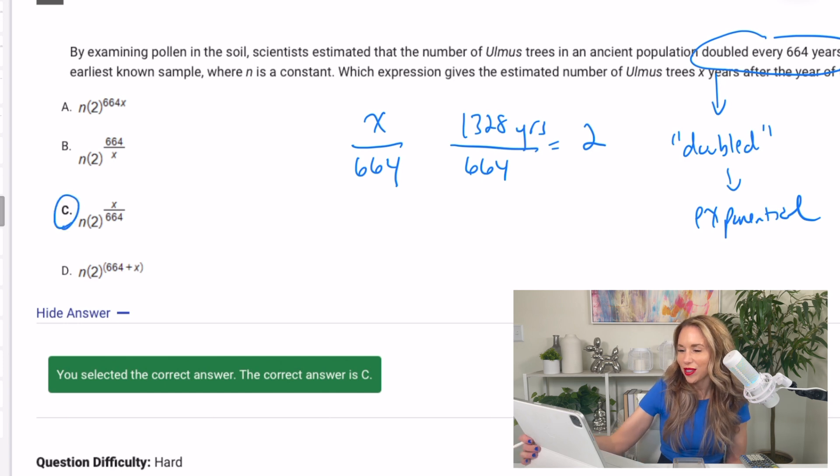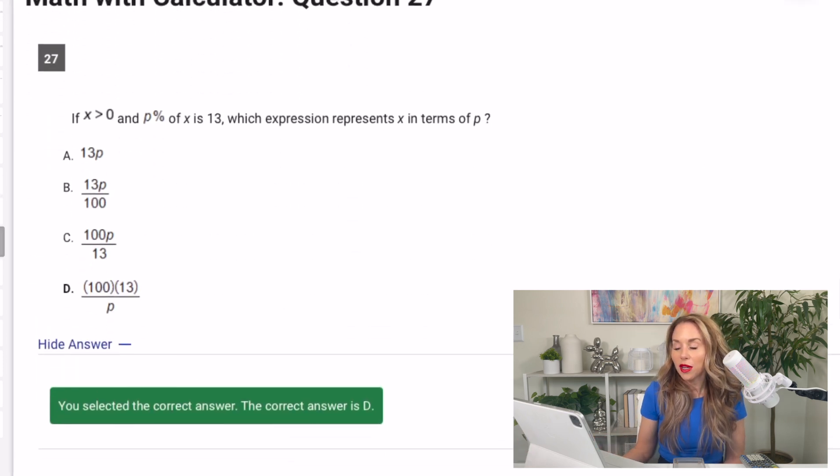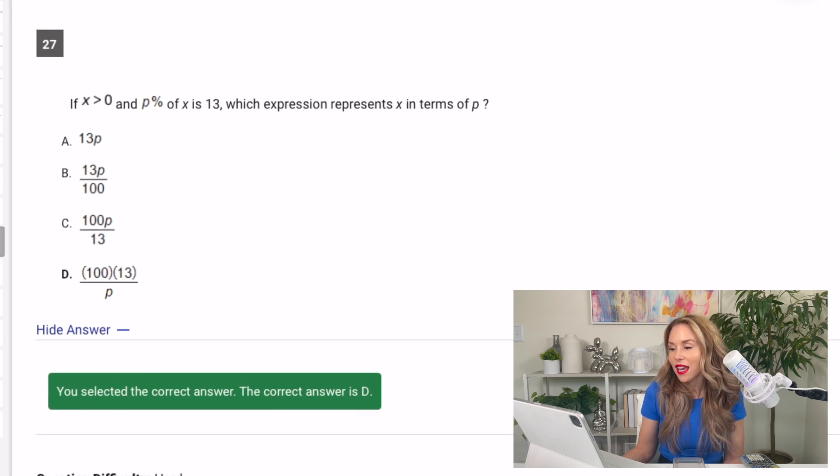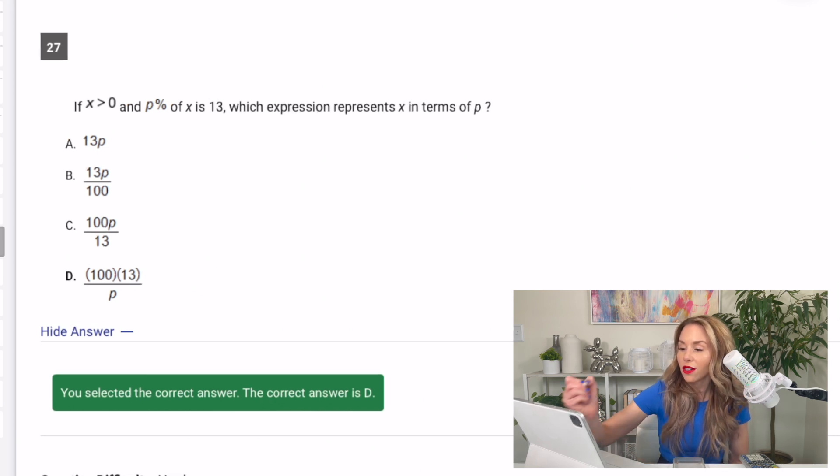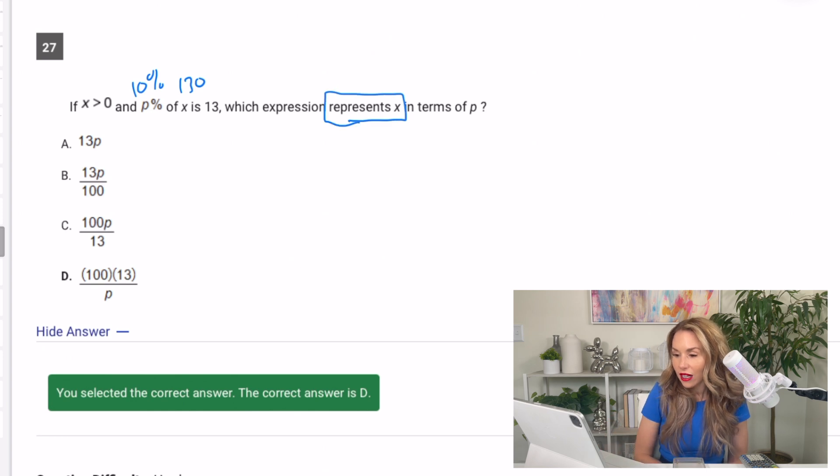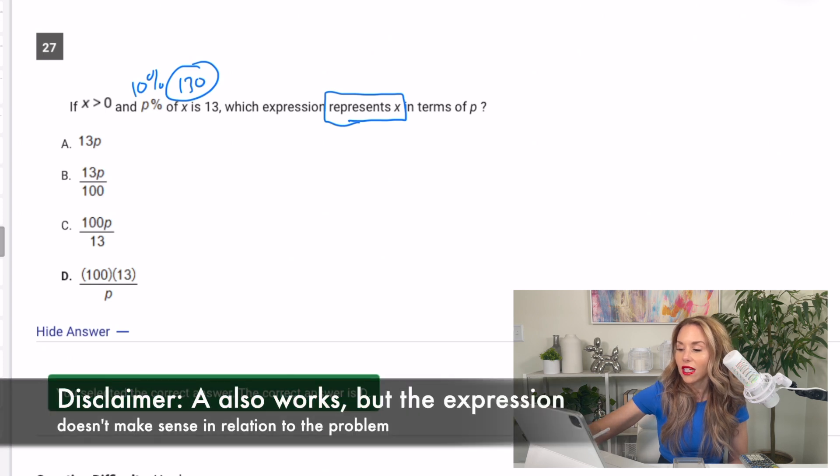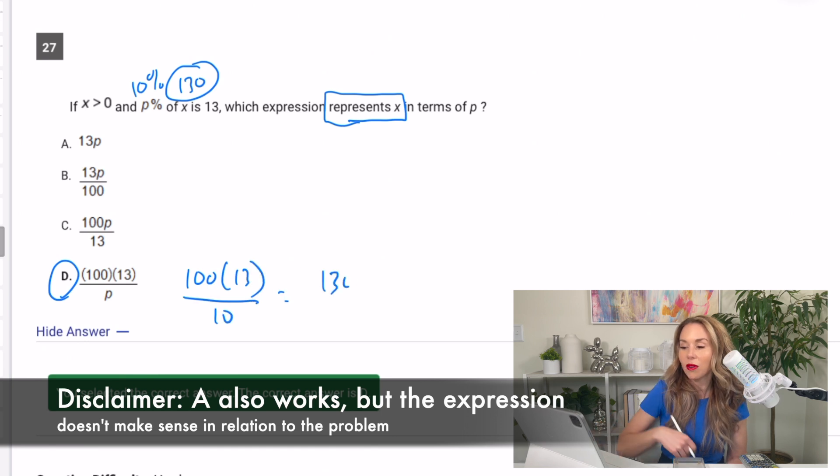Let's go to another one, 27. So if x is greater than 0 and p% of x is 13, which expression represents x in terms of p? You know what I would do? I would probably just pick numbers and use nice numbers for this to make it easy. So 10% of 130 is 13. So I would make p 10 and I would make x 130 and solve. Now they're saying which expression represents x. So that means we want an answer of 130. So I'm going to put 10 in for p until I get 130. And I actually get 130 with D because 100 times 13 divided by 10 gets me 1300 divided by 10, which is 130, which is what I needed.